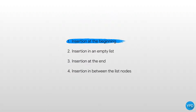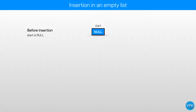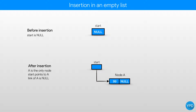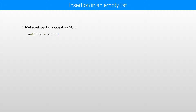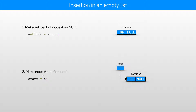Now let's see inserting a node in an empty list. Believe me, it's the same as the earlier case. Before insertion, start is null. After insertion, node A is the first node, start is pointing to node A, and link of A is null. In code, we make the link part of node A null — since start was already null, we write A arrow link equal to start. Then we make start point to node A by writing start equals to A. You can use the same function shown earlier to insert in an empty list.